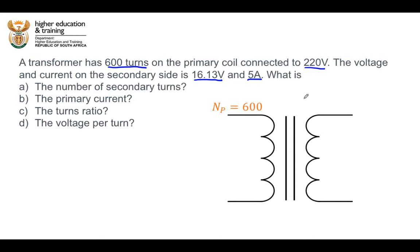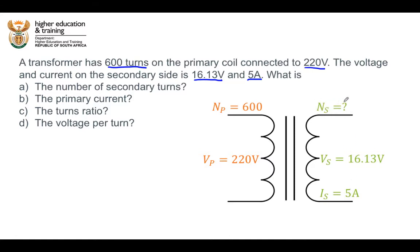We are told that the number of turns in the primary coil is 600, and the voltage across the primary coil is 220 volts. We are told that the voltage across the secondary coil is 16.13 volts and the current through the secondary coil is 5 amps. They want us to find the number of turns in the secondary coil, the current through the primary coil, the turns ratio, and the voltage per turn.